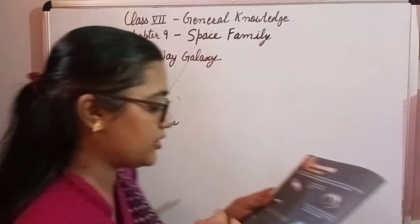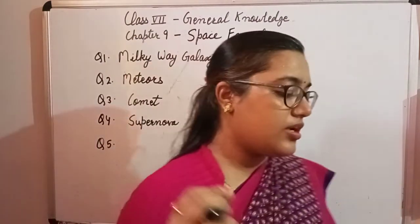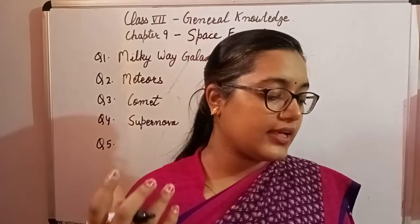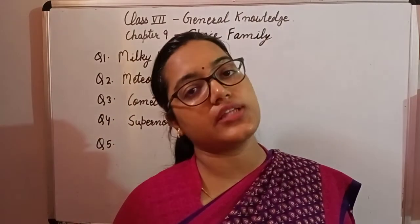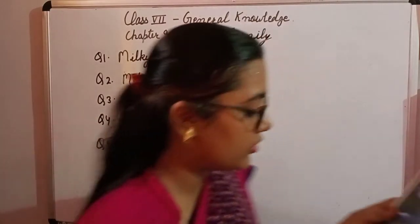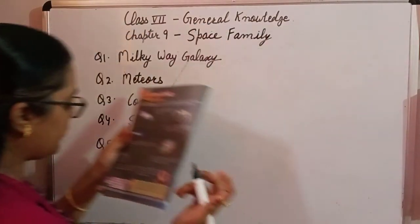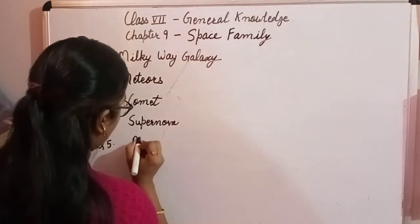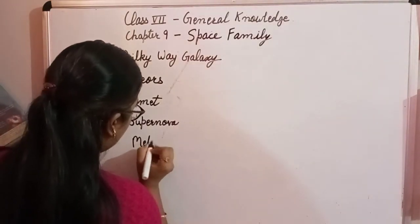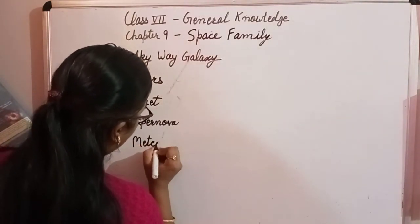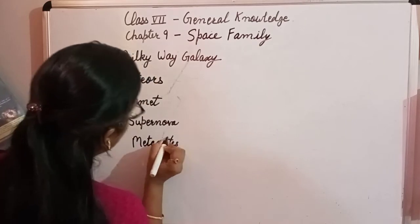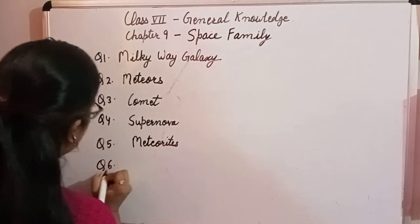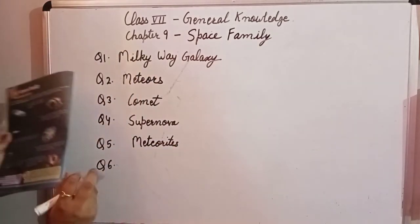Question number five: these are large meteors that reach the Earth. They are highly useful for scientific research. So meteorites are large meteors that reach the Earth and are highly useful for scientific research.